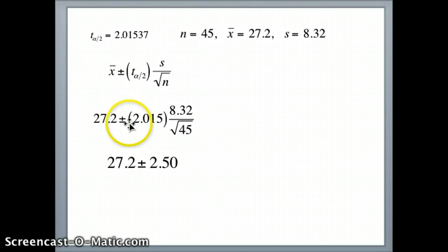x-bar 27.2 plus or minus 2.015 times 8.32 divided by the square root of 45. To do this, I suggest you do 2.015 times 8.32 divided by the square root of 45 first. And you should get approximately 2.50. So we have 27.2 plus or minus 2.50.